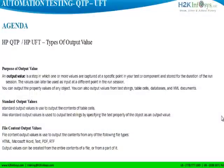In this video, we will see the types of output value. The purpose of output value is to capture dynamic values generated by an application. You can capture output value by using any of the following different types. The first one is called the standard output value, which captures any dynamic string generated by your application.